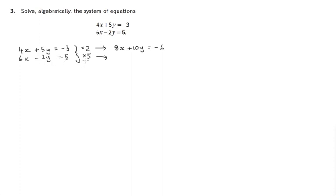Similarly here's two equal things. If we multiply each of them by 5 we'll still have two equal things. So everything on the left by 5, everything on the right gets multiplied by 5. So 5 times 6x. 5 times negative 2y is negative 10y. 5 times 5 is 25.